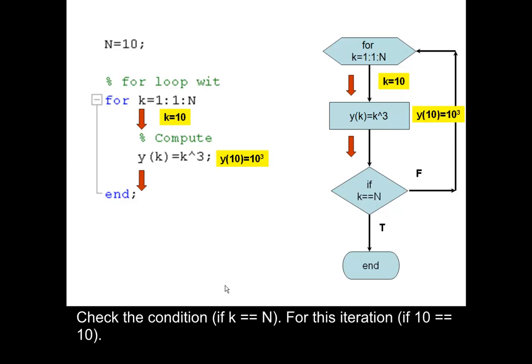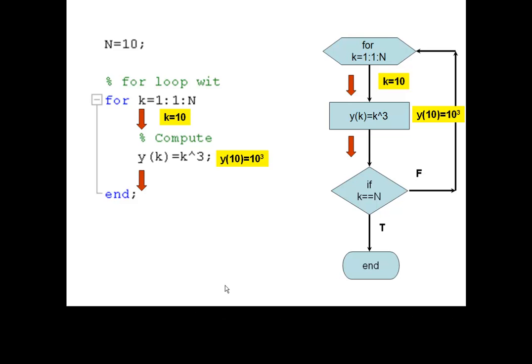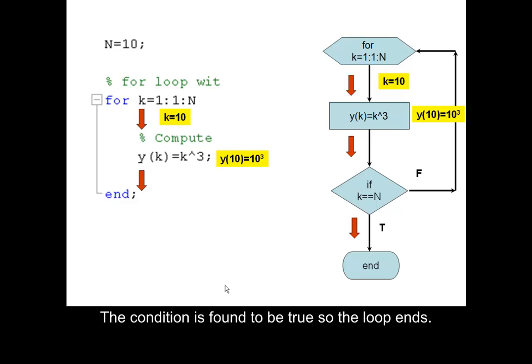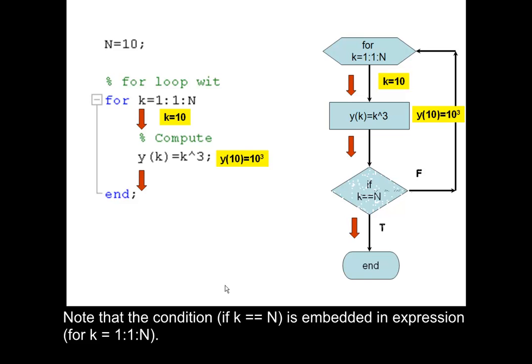Check the condition: if k is equal to n — for this iteration, if 10 is equal to 10. The condition is found to be true, so the loop ends. Note that the condition if k is equal to n is embedded in the expression for k equals 1 colon 1 colon n.